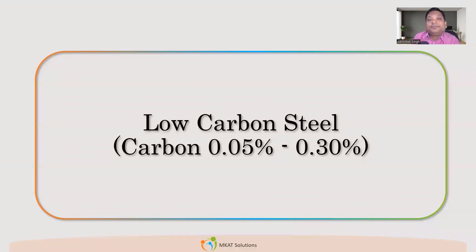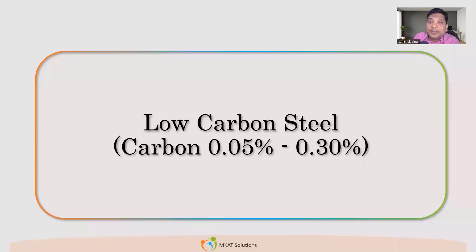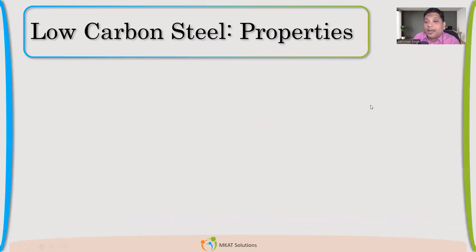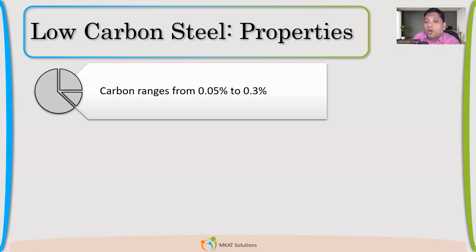Too much carbon makes the steel non-weldable because it will crack after welding if it is too hard or too brittle. As we keep increasing the carbon percentage, the material moves from ductile to brittle. So the goal is to have carbon in the right amount so that we get the strength and we are still able to weld it — that is the category we call low carbon steel.